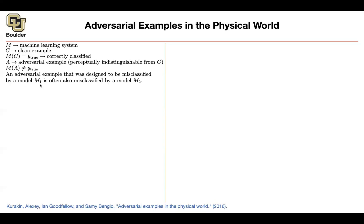We saw from the first paper that you can design an adversarial example for one particular model and it will generalize to a totally different model — a different architecture, trained on a different dataset. That's why adversarial examples are serious problems. If this were only for one particular architecture trained on that particular dataset, it wouldn't be a big deal. The problem is that they are generalizable.